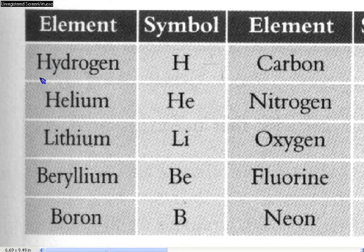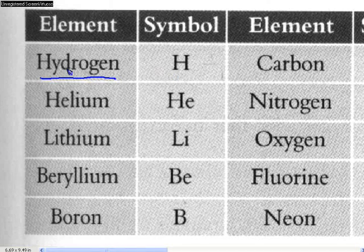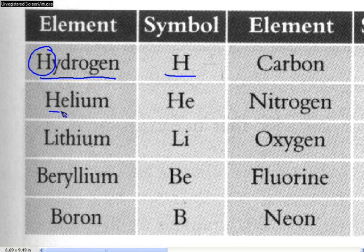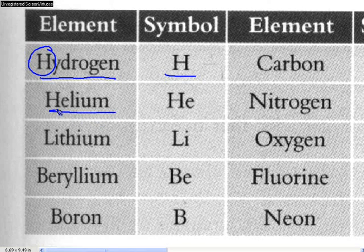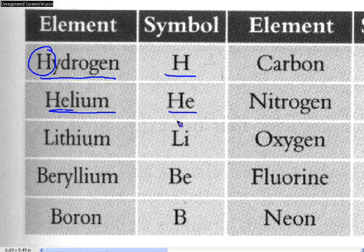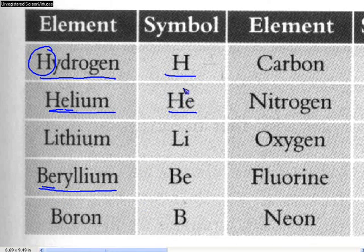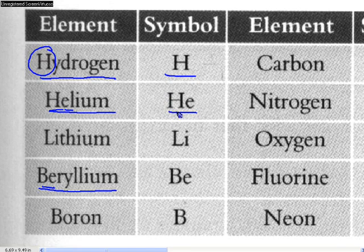Let's consider the element hydrogen. The symbol is H. Helium, we combine H and E. Beryllium, B and E. Now remember, the first letter is always a capital letter.